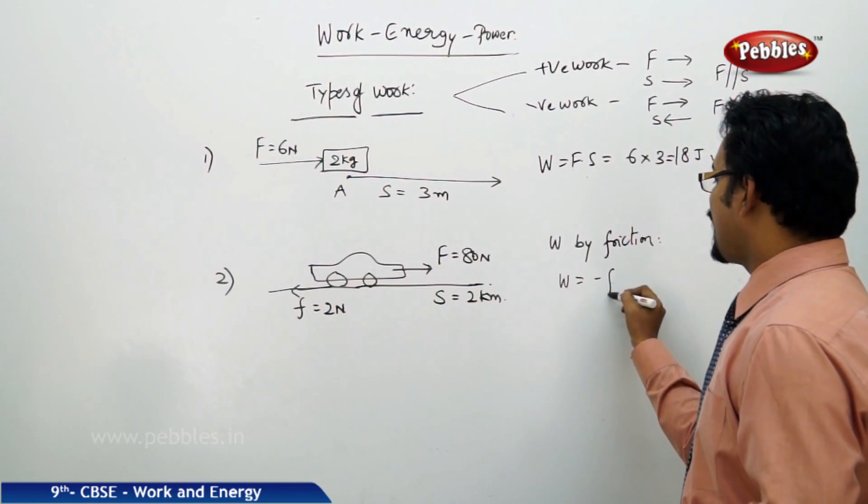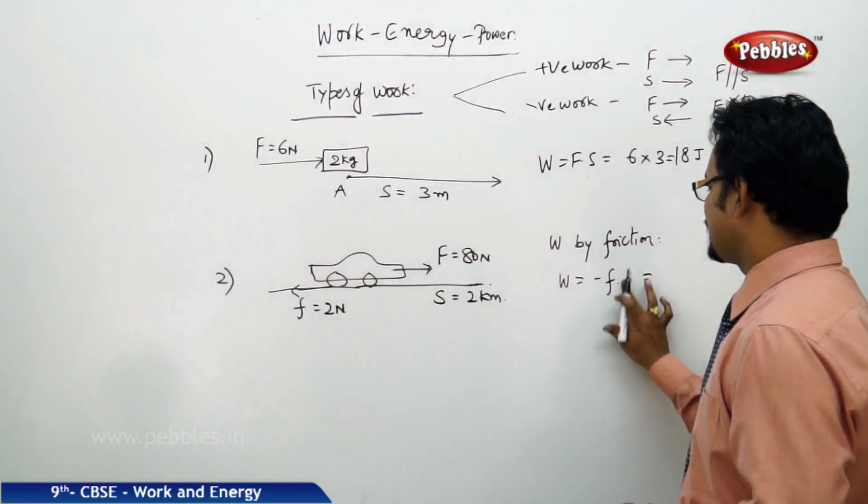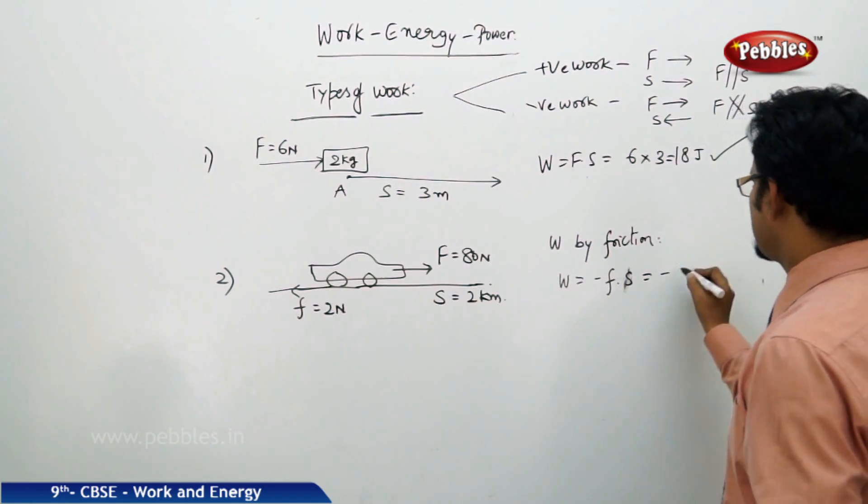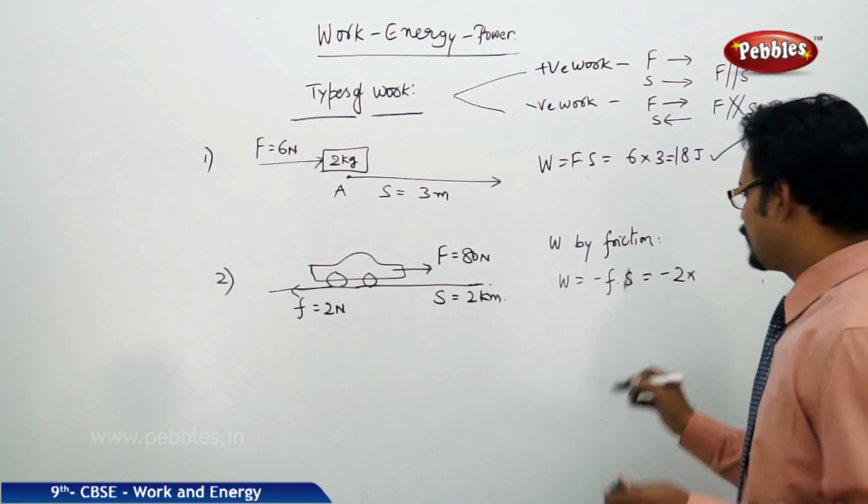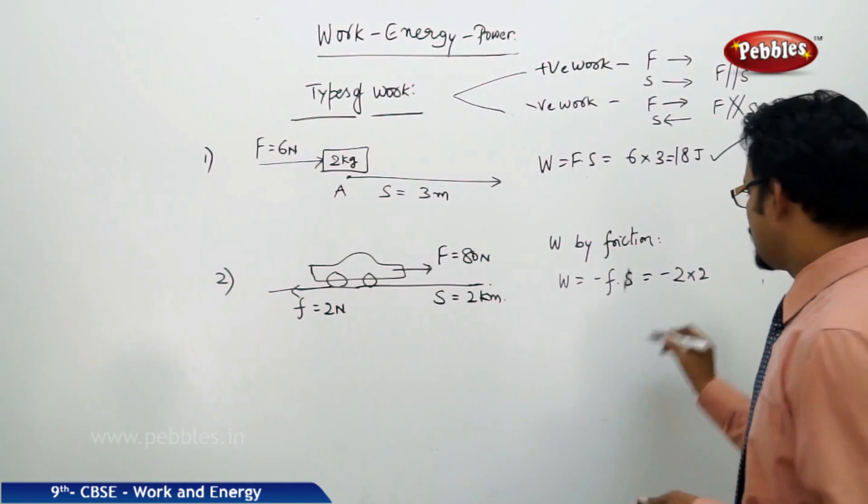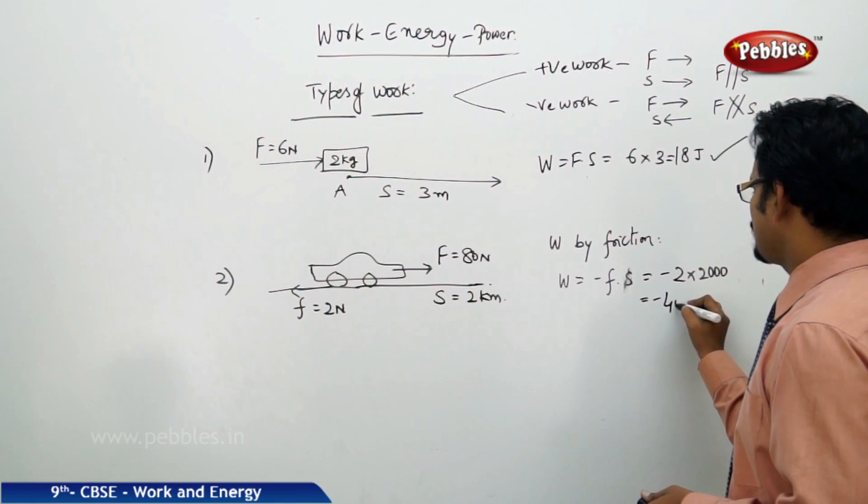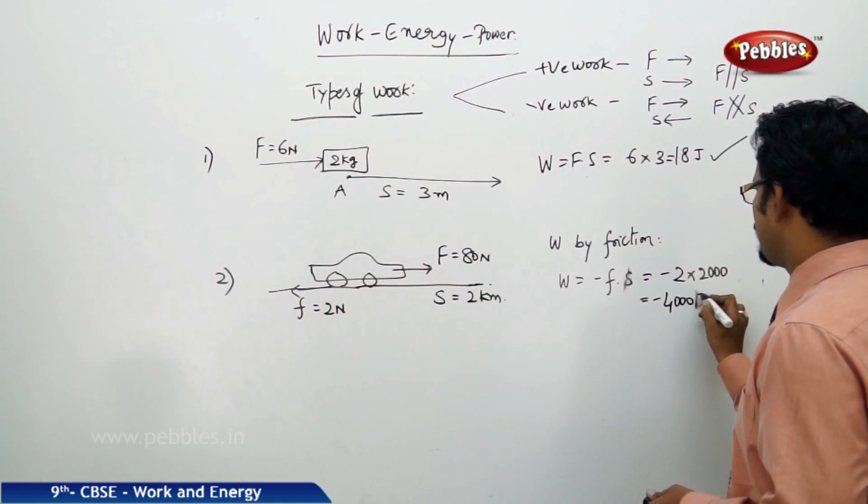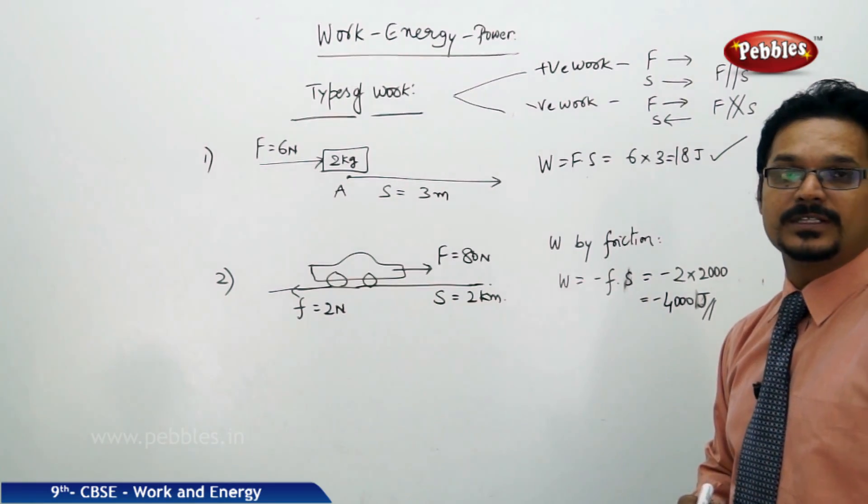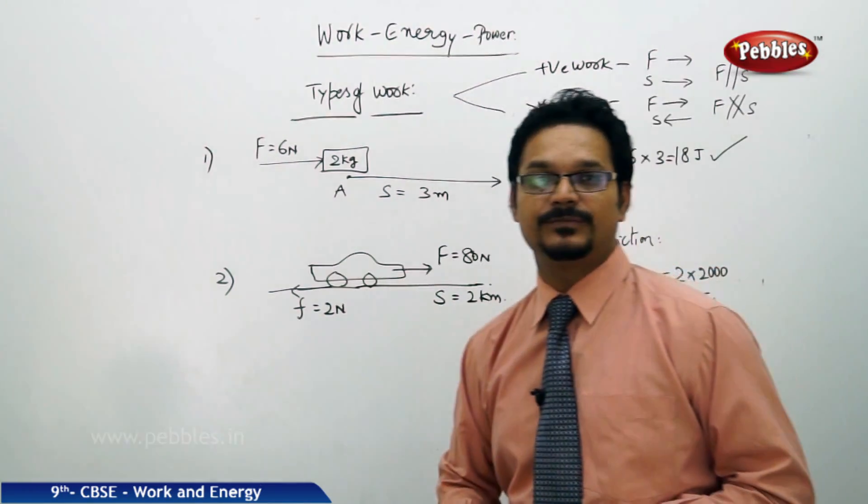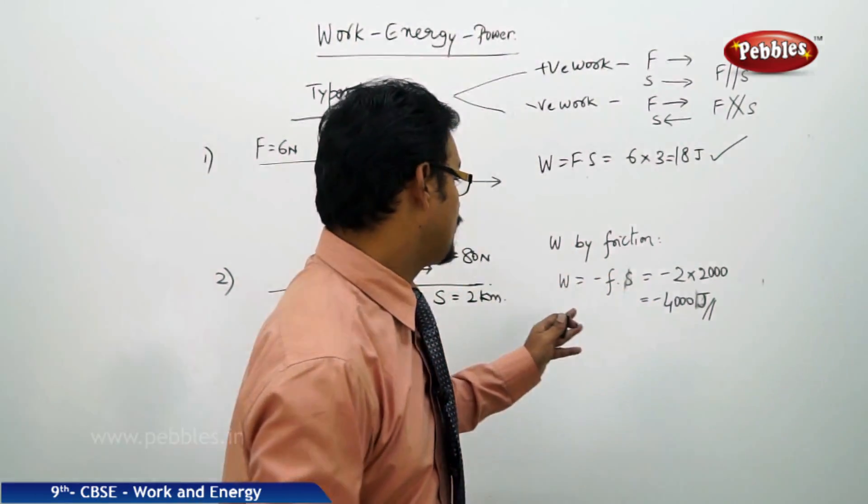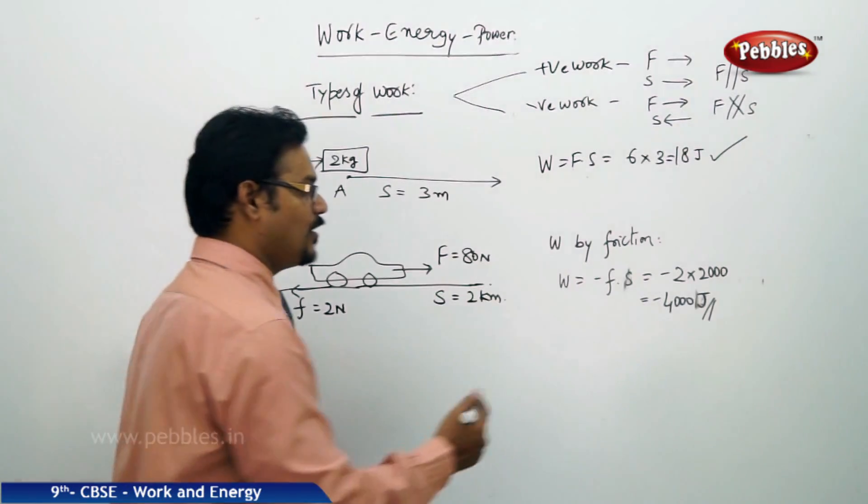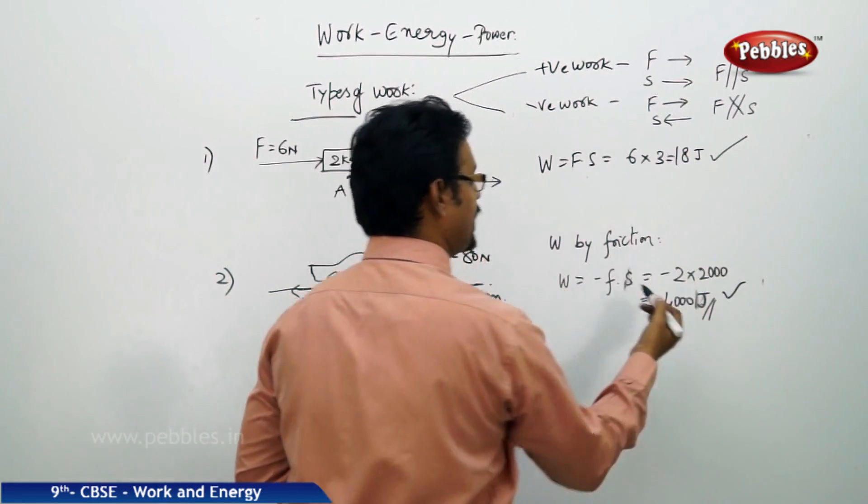So therefore W equals to minus F into S. So minus. The friction value is 2 into displacement is 2 km. You convert into meters, which is 2000. So minus 4000 joules is the amount of work done. And this is negative work, because friction is opposite to the motion of the car. So negative work. So that is how we can differentiate positive work and negative work.